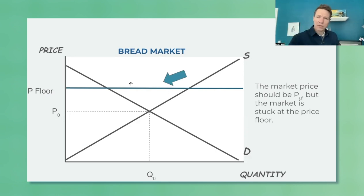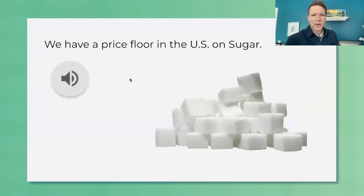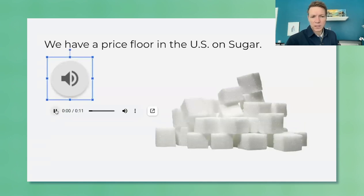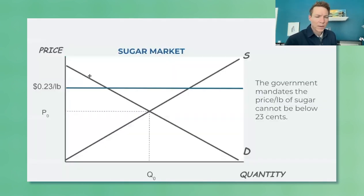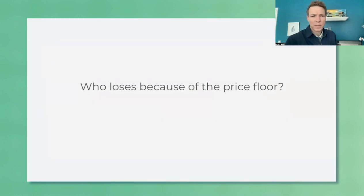To show that price floors are real, here's another clip from the podcast: 'The U.S. government will guarantee this minimum price for sugar that is not to drop below 22.9 cents per pound.' So this is a real thing — there is a price floor on sugar. We put it right here on the graph at 23 cents. Now ask your students who loses because of the price floor.